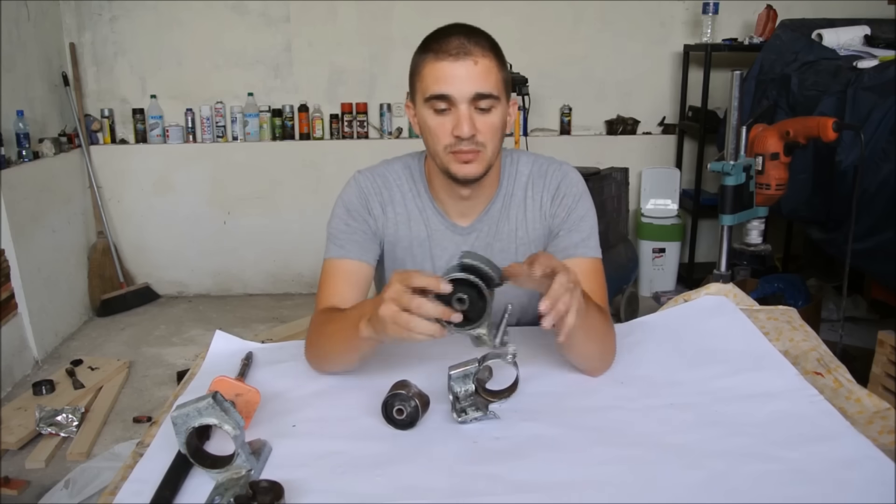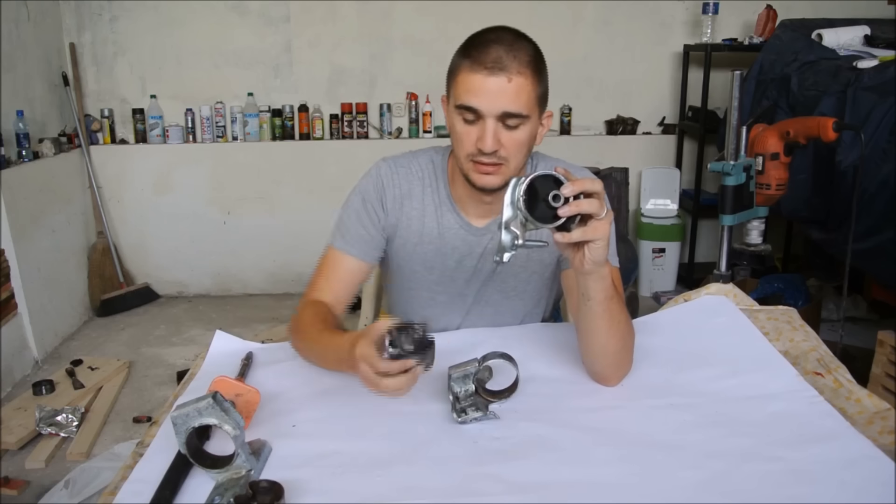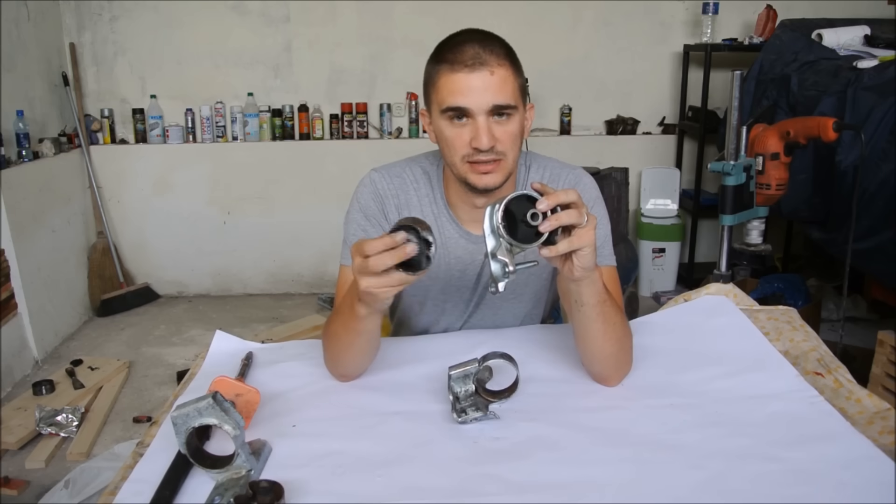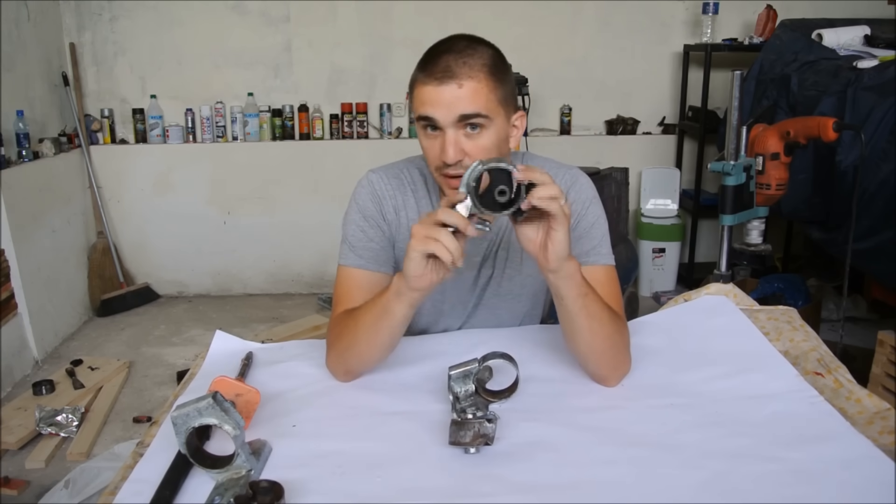Now, the first thing you need to do is, I'm going to show this on my other mount where I've already done this, is actually to get the old insert out. As you can see, this is not just rubber inside the bracket, but it's a steel ring where the rubber is inside and there's this pin inside and that is pressed inside of the mount bracket.